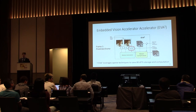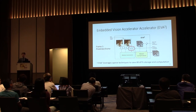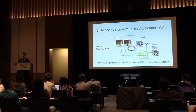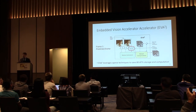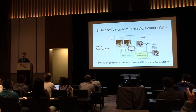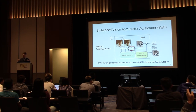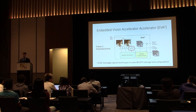EVA Squared leverages sparse techniques from the research community, enabling 80 to 87% savings on both storage and computation. This means every single piece of activation data is stored on-chip rather than requiring off-chip access.